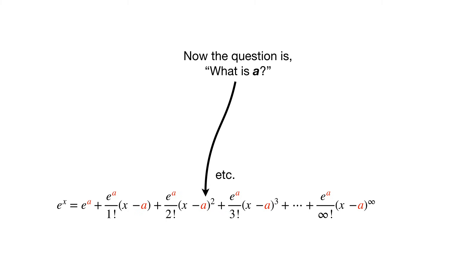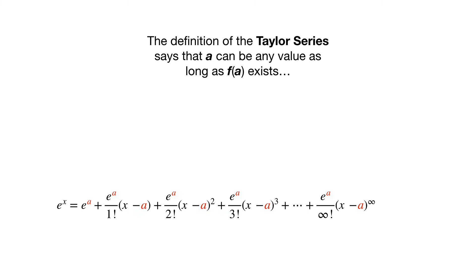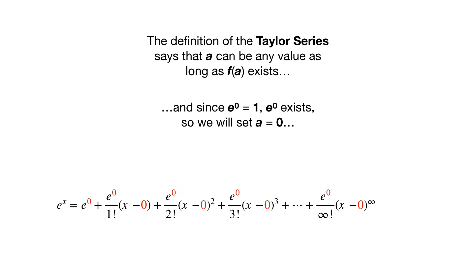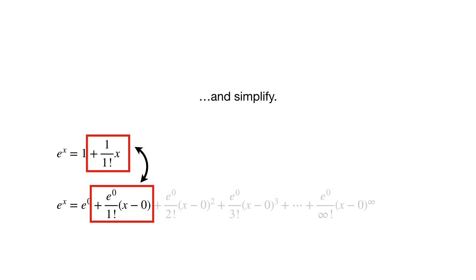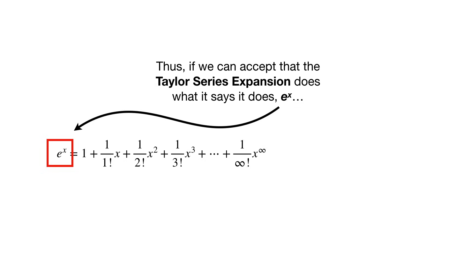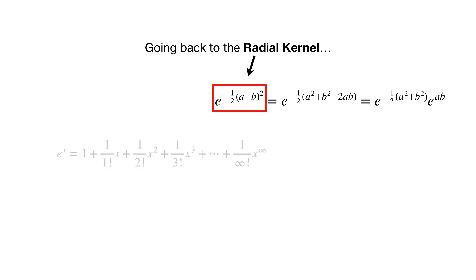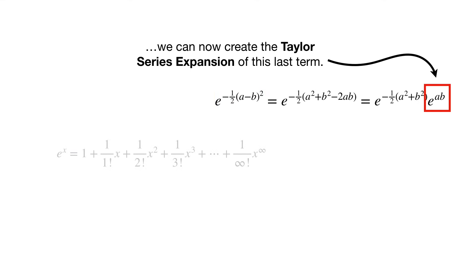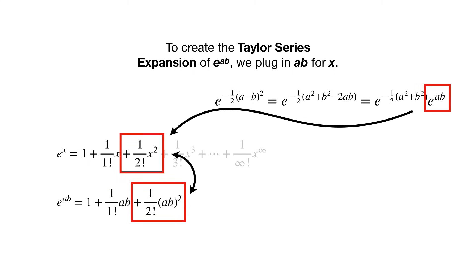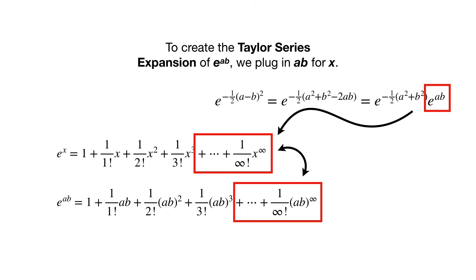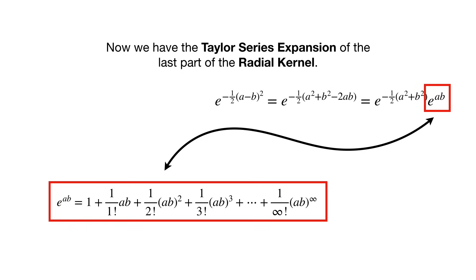The definition of the Taylor series says that a can be any value as long as f of a exists. And since e to the 0 equals 1, e to the 0 exists, so we will set a equal to 0 and simplify. Thus, if we can accept that the Taylor series expansion does what it says it does, e to the x is equal to this infinite sum. Going back to the radial kernel, we can now create the Taylor series expansion of this last term. To create the Taylor series expansion of e to the ab, we plug in ab for x. Now we have the Taylor series expansion of the last part of the radial kernel.